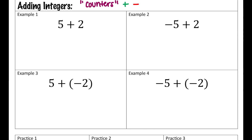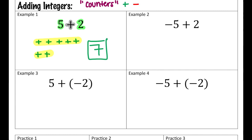Let's look at number one. We're starting off with positive five, so I'm going to start by drawing five positive signs — one, two, three, four, five. And if I read the rest of the expression, we're going to add positive two, so that means I'm going to add on two more positives. Because everything's positive, I don't have any zero pairs, so all I'm going to do is total up how many I have — six and seven. In total, we have seven positives, or positive seven.